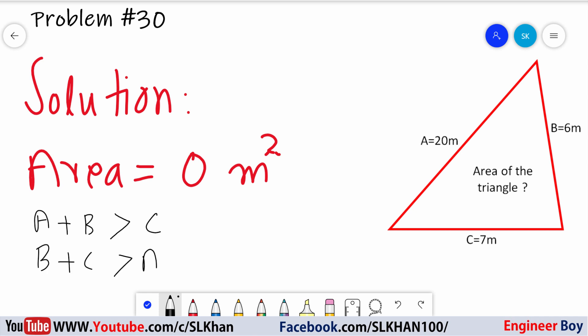That's the rule. Triangle must satisfy this rule. As you can see in this triangle, it does not satisfy the parameters rule. If I add A plus B that must be greater than C, and A is 20 plus B is 6, and that's greater than 7.